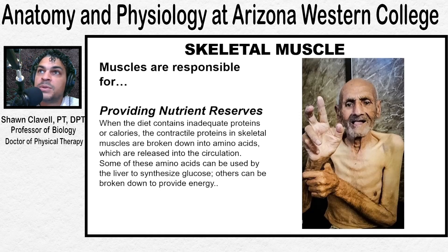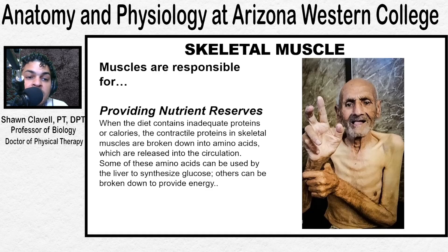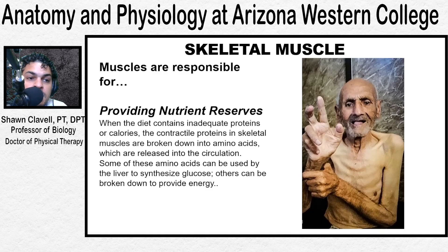Finally, muscles are responsible for providing nutrients. This happens in stages of extreme starvation, or perhaps where someone doesn't have an adequate protein source. Ultimately, we can break down the proteins of our muscles and convert them into glucose — they'll be synthesized into glucose. That's a term called gluconeogenesis: the creation of new glucose through amino acids. As a result, we can use our muscles as a nutrient reserve.